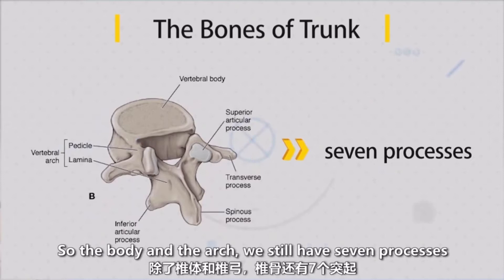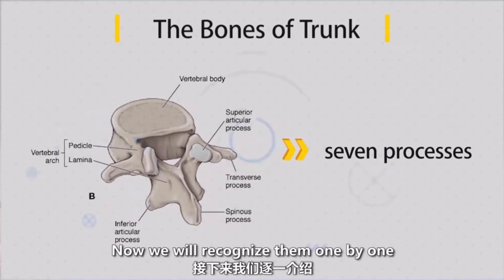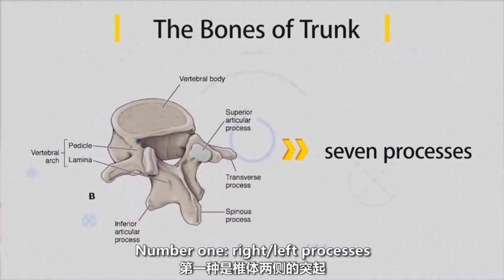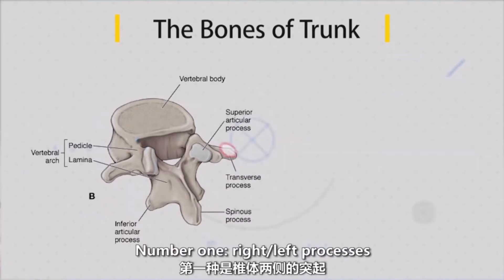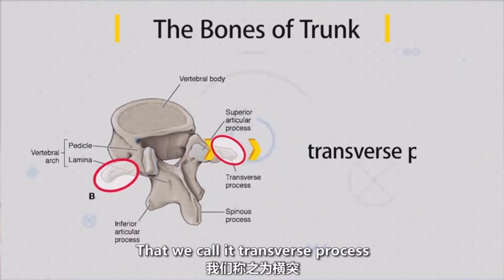We have seven processes. So we will recognize them one by one. Number one and two — right and left — that's what we call the transverse process.